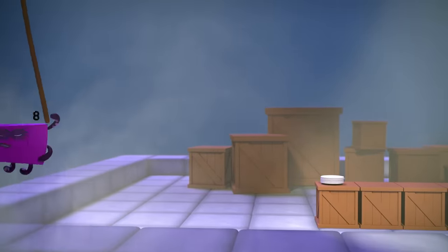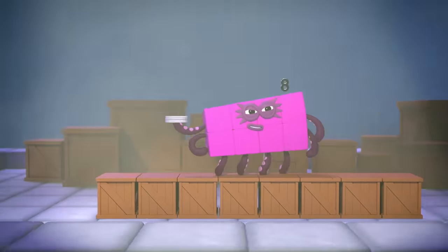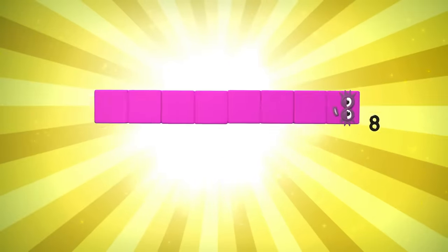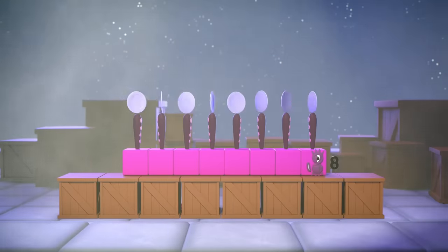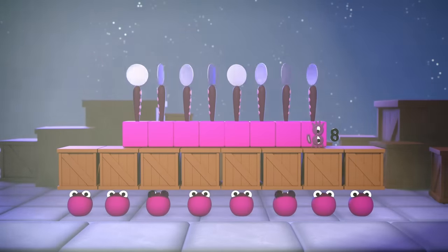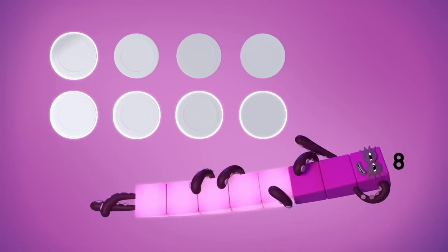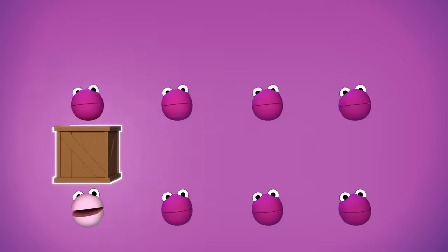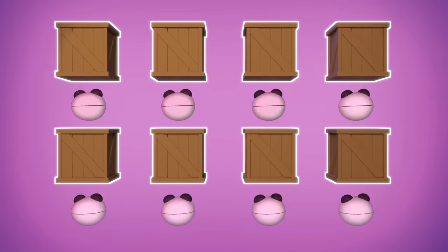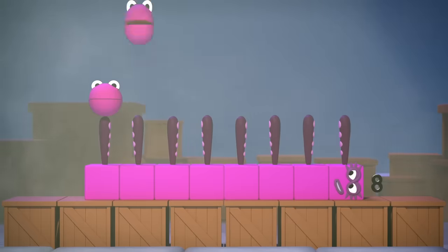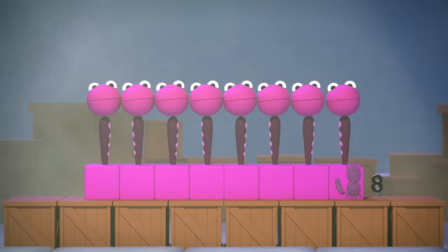Eight numberblocks and me, counting everything we see. Spinning on the blade, spinning on the plate. Octoblock spin. Lifting on the crates, numberblocks lift. Eight numberblocks and me. One, two, three, four, five, six, seven, eight, eight plates. One, two, three, four, five, six, seven, eight, eight crates. Eight numberblocks and me.